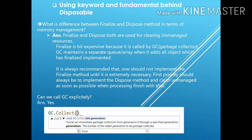So the next question is: what is the difference between finalize and dispose method in terms of memory management? The common thing between dispose and finalize is that both are used for clearing the unmanaged resources. The difference is that finalize gets called with the help of the garbage collector, whereas dispose can be called by the programmer. Finalize is a bit expensive because it is called by the garbage collector. GC maintains a separate queue or array where it adds all the objects which have the finalize method to be implemented. It is always recommended that one should not implement the finalize method unless it is extremely necessary. First priority should always be given to implementing the dispose method and cleaning the unmanaged resources as soon as possible when processing is done.